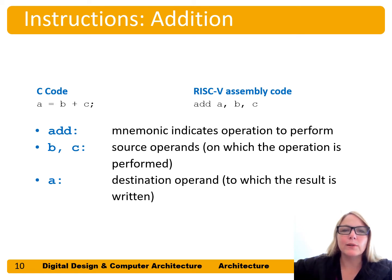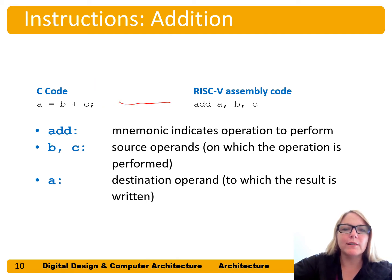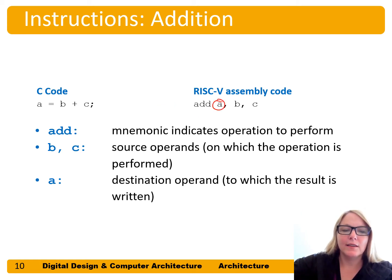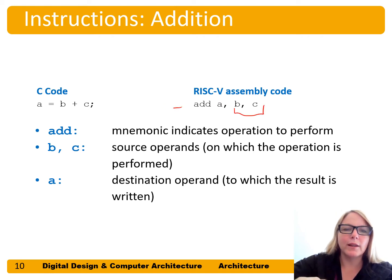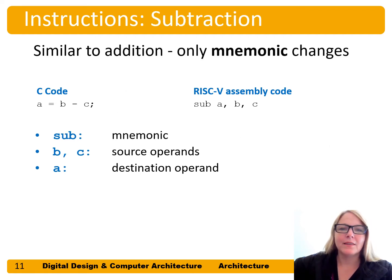What are the instructions that a RISC-V architecture can perform? Addition is one of the basic operations commonly used. Here's our high-level C code: a equals b plus c. The equivalent RISC-V assembly code has a mnemonic 'add' that helps us remember what this operation is doing — performing addition. Here's the destination 'a' and the two source operands 'b' and 'c', performing a equals b plus c.